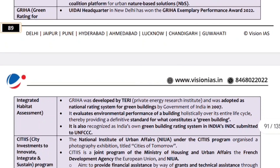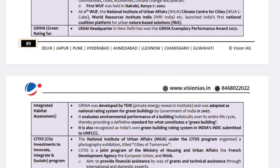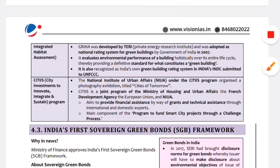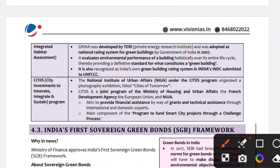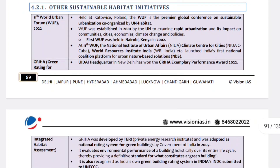Next topic is GRIHA — Green Rating for Integrated Habitat Assessment. This is an exemplary performance award developed by a private research institute. When green buildings were adopted in 2007, the national rating system was already started. This is an environmental performance system that allows evaluation of green buildings — for example, solar panels and use of materials. The UNFCCC also recognized this green building rating system. The UIDA headquarters was awarded this award in 2022.